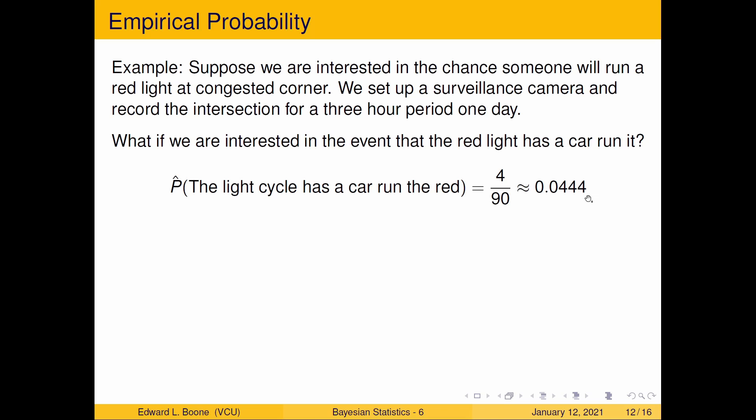And you say, wow, that's a lot bigger than the last one. Yes, it is. The last one was in the fractions of percent chance of happening. Here, this is about a 4% chance of happening that if you watched a specific light cycle, there's a 4% chance that a car would run that light cycle.